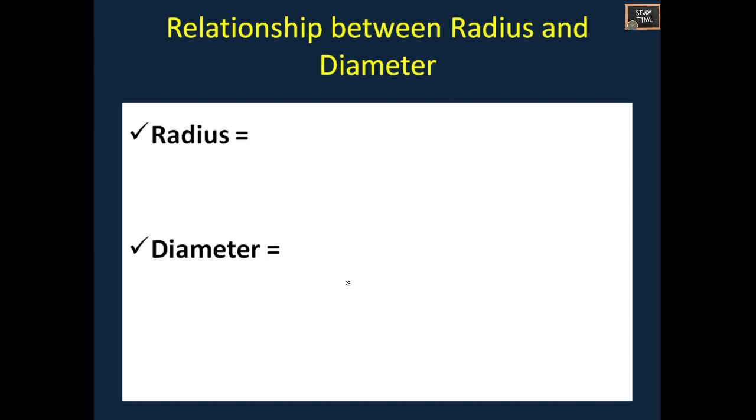Relationship between radius and diameter. The answer for this is radius equals diameter divided by 2. If radius is given, you have to find it from diameter by dividing by 2. If you want to find diameter from the radius, you have to use radius multiplied by 2. That is the relationship between radius and diameter.